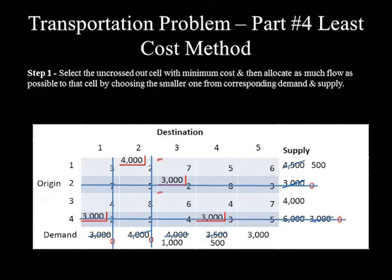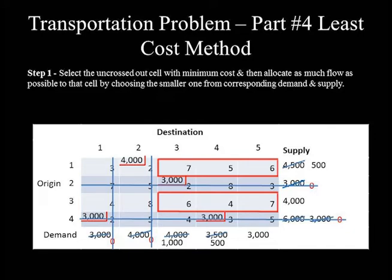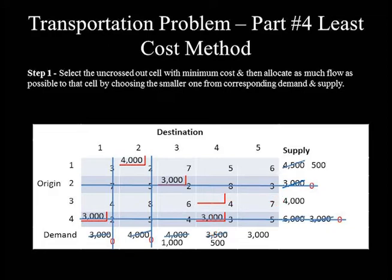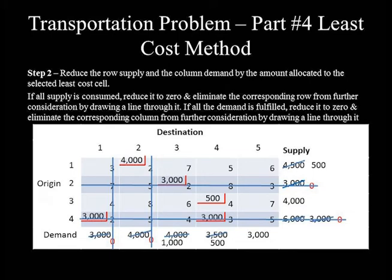We are now left with six undeleted cells. The least cost among these is 4, which is the unit cost of the Origin 3 to Destination 4 route. Unfulfilled demand for this cell is 500 and supply is 4,000, so the smaller — 500 — is allocated. This reduces demand from 500 to 0 and supply from 4,000 to 3,500. Since all Destination 4 demand is fulfilled, column 4 is crossed out.